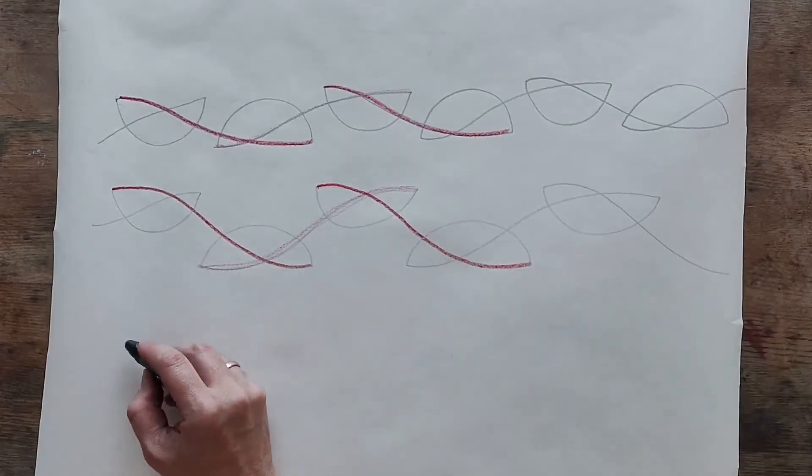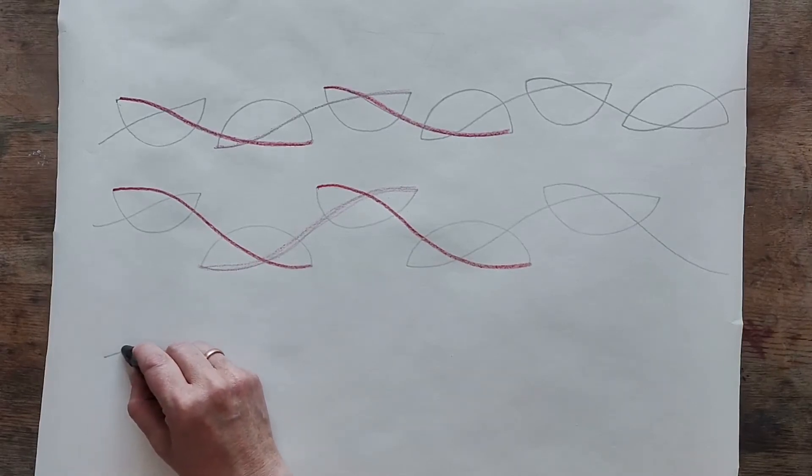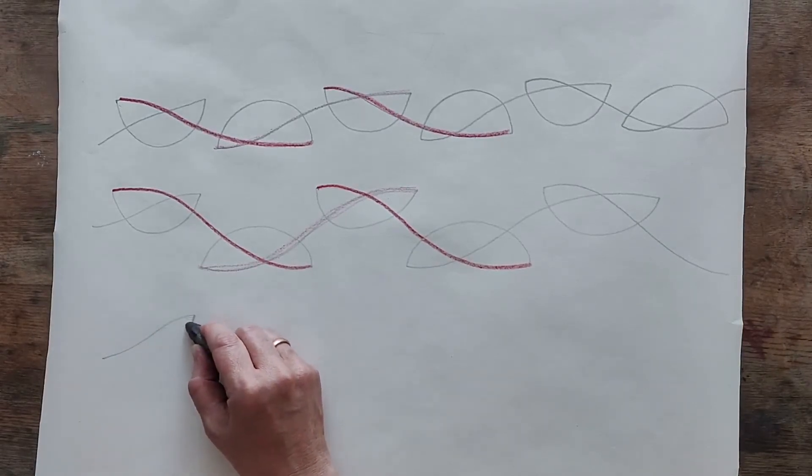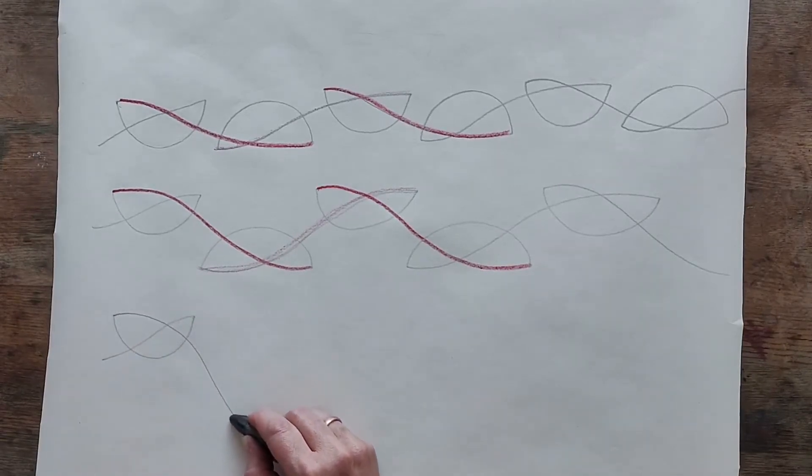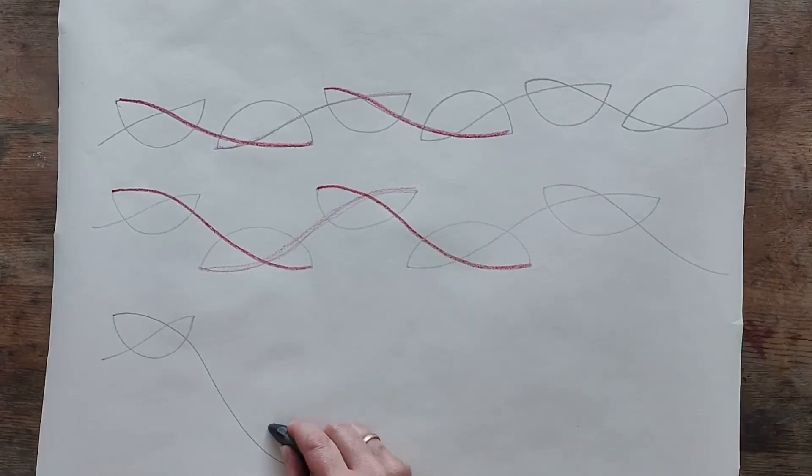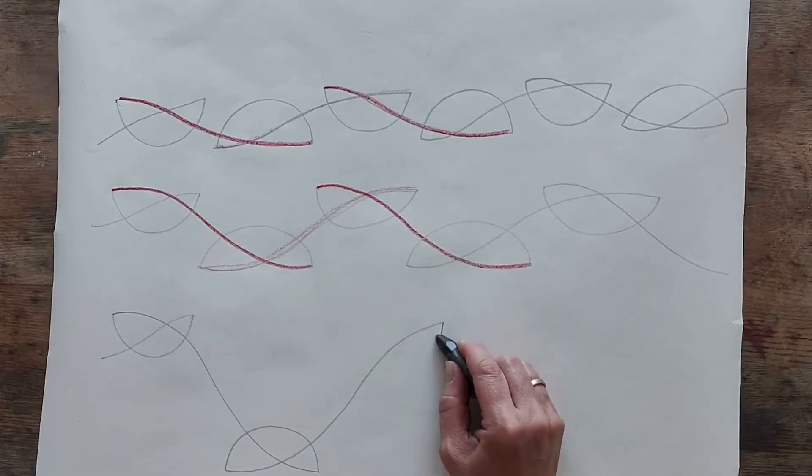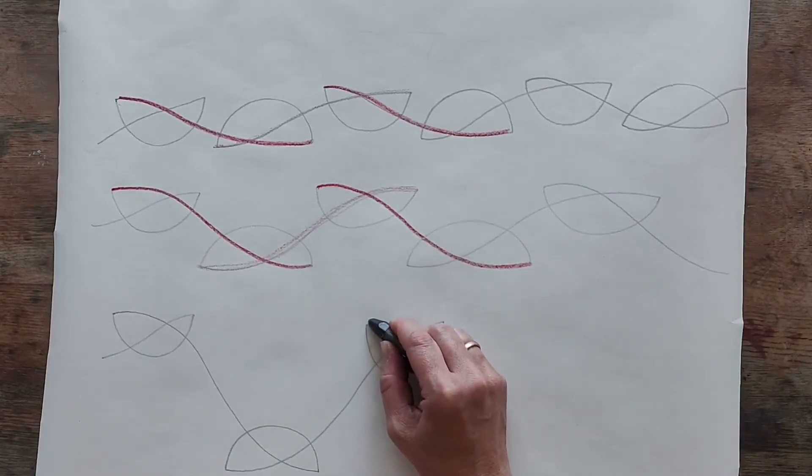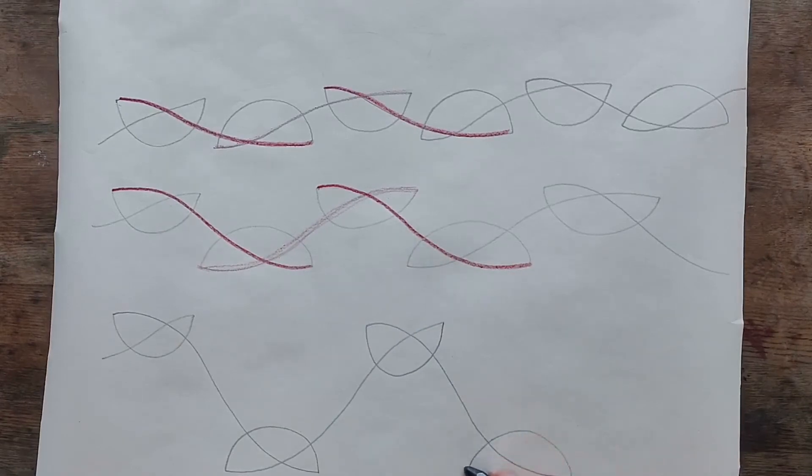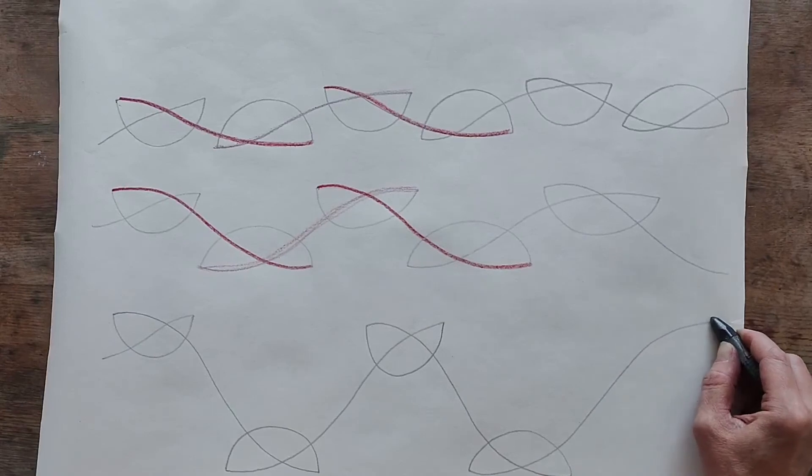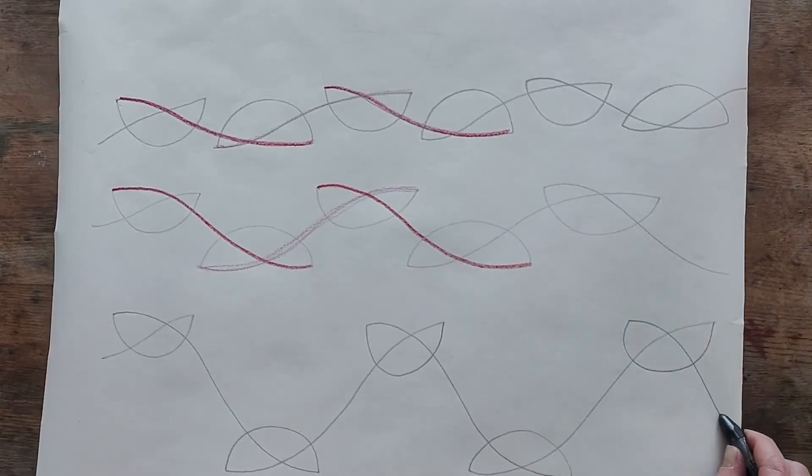So what you want to do now is basically draw your knot and then a long line down. Then you draw your knot and then a long line up the way. Then you draw your knot, a long line down, and your knot and a long line up, and your knot and then a long line down.